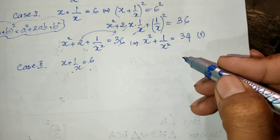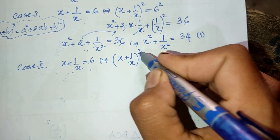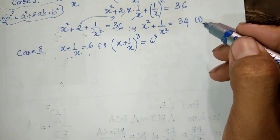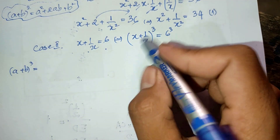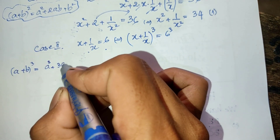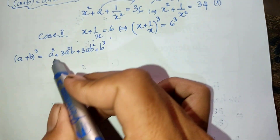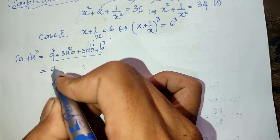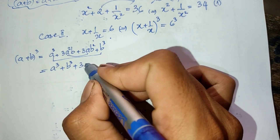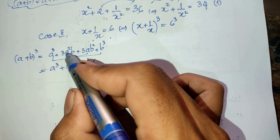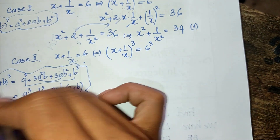Case two: I have h plus one divided by h equals six, and now I raise both sides of this equation to the power three. So h plus one divided by h to the power three equals six to the power three. We use the formula a plus b to the power three equals a cubed plus 3a squared b plus 3ab squared plus b cubed, which I rewrite as a cubed plus b cubed plus 3ab times a plus b.